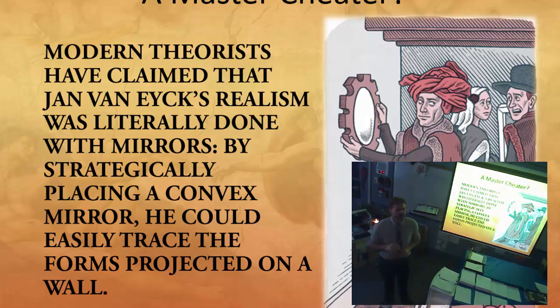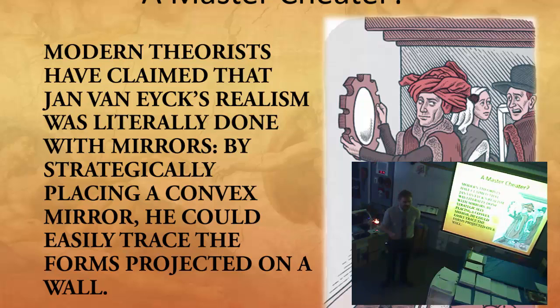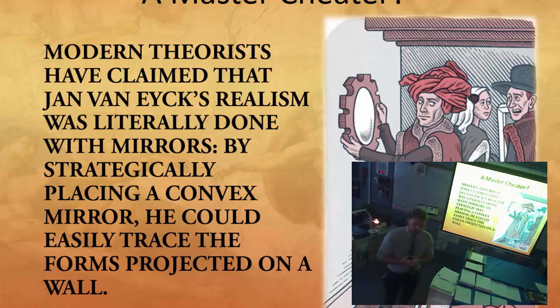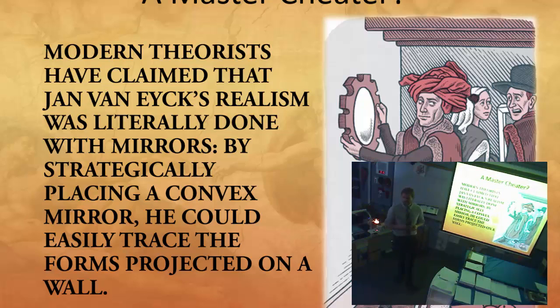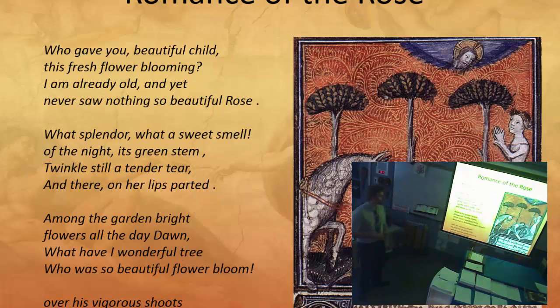Modern theorists claim Jan van Eyck's realism was literally done with mirrors. There's a book called The Secret Lives of Artists available as a PDF on the AP site or my dropbox — it has interesting stories about each artist that might help you remember their personalities. People at the time felt using mirrors was cheating — not doing it from scratch. But modern artists use projectors all the time; if you're in the business, you're tracing to go fast and make it look right.